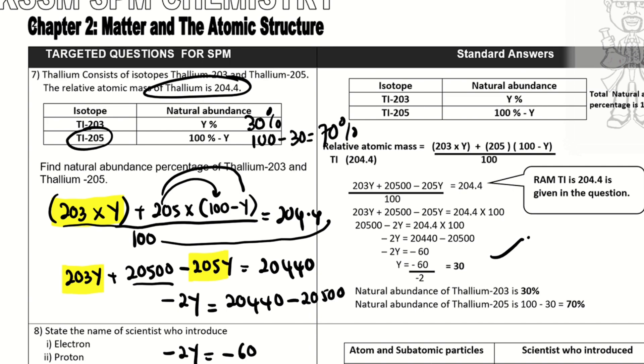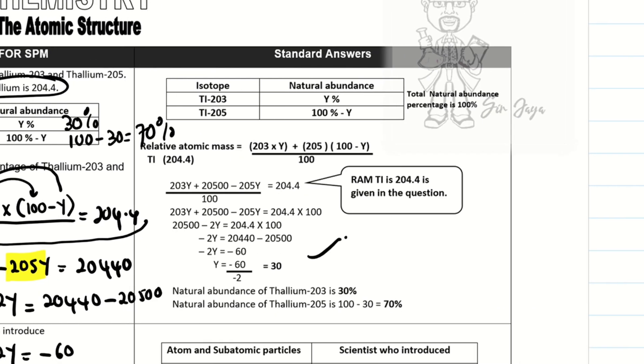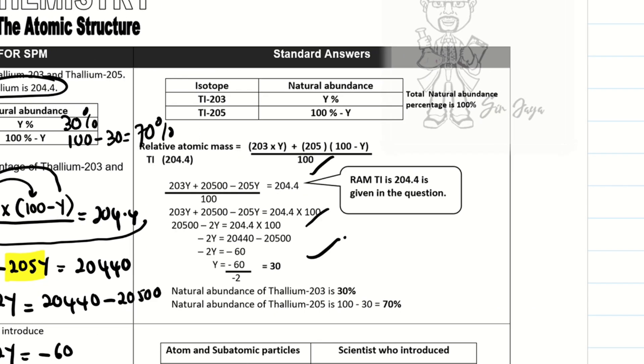Applying the result: thallium-203 is 30% and thallium-205 is 100 minus 30, which is 70%. The answer is given in the module. Try to do more revision — good luck, and thank you very much.